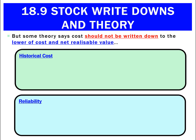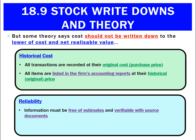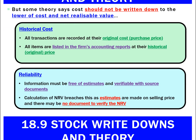There is some theory that actually says no — do not record a stock write-down. If the net realizable value falls below cost, it doesn't matter; keep it at cost. The historical cost principle says always value transactions at their original purchase price, and we value reports at the historical cost. Reliability also says keep things free of estimates with a verifiable document. The net realizable value totally breaches that because we are making an estimate on the selling price — it's always going to be a guess, with no real documentation to verify the amount. Together, both historical cost and reliability contradict recording a stock write-down.